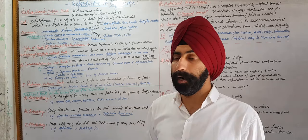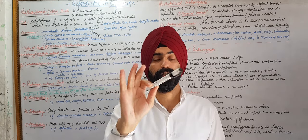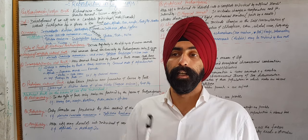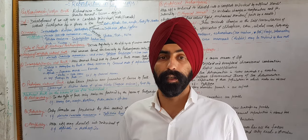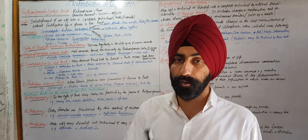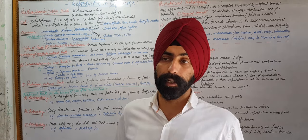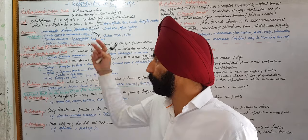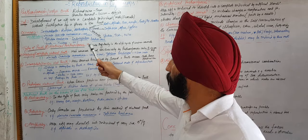Types of parthenogenesis are broadly divided into two main types: natural parthenogenesis and artificial parthenogenesis. Natural parthenogenesis occurs naturally without any involvement of human beings. Artificial parthenogenesis is one in which human beings induce cells to undergo this process using artificial stimuli.